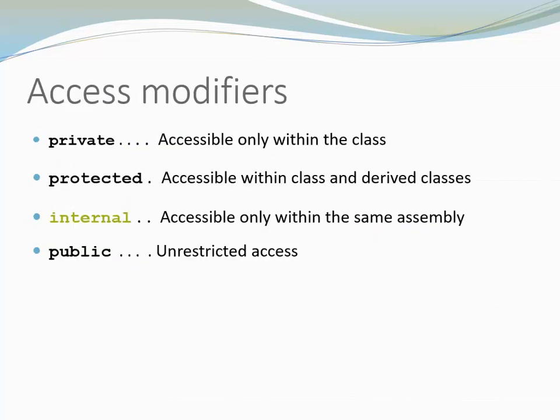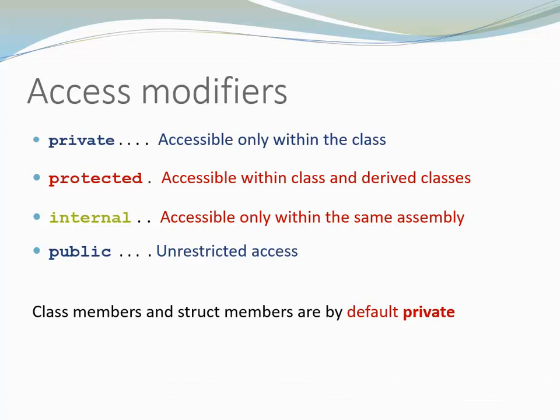When we look at access modifiers, we again see some similarities and differences. Private and public specify the same accessibility as in Java. However, protected provides only accessibility within the class and its derived classes. And internal is an access modifier we don't have in Java — it provides access within the same assembly. There is also a difference regarding the default accessibility for both class and struct members: in C-sharp it is private, while in Java the default is package private.